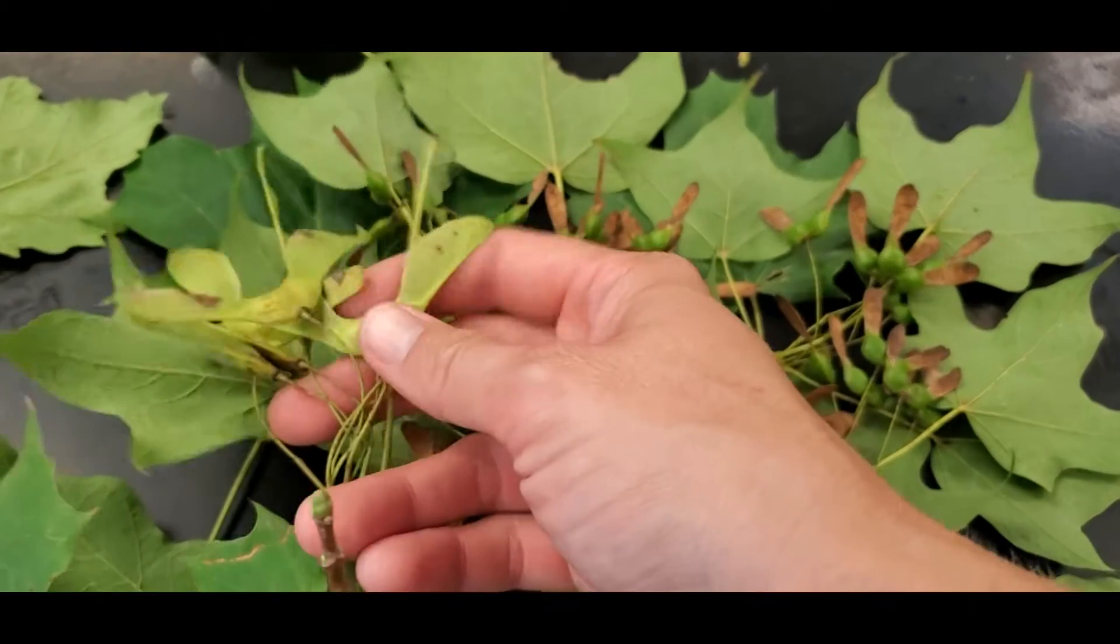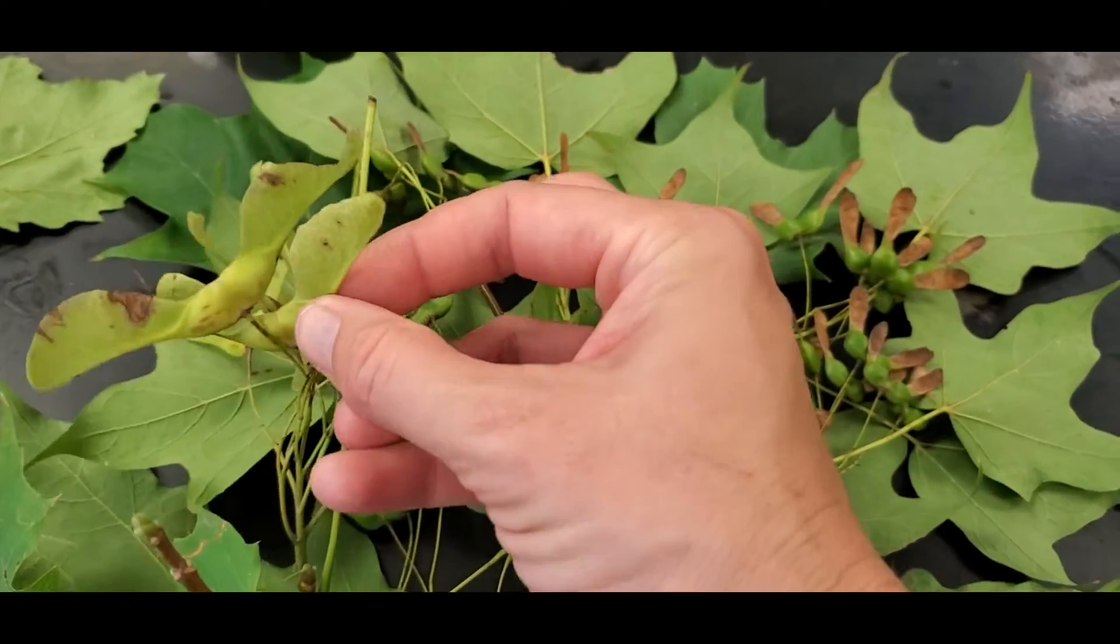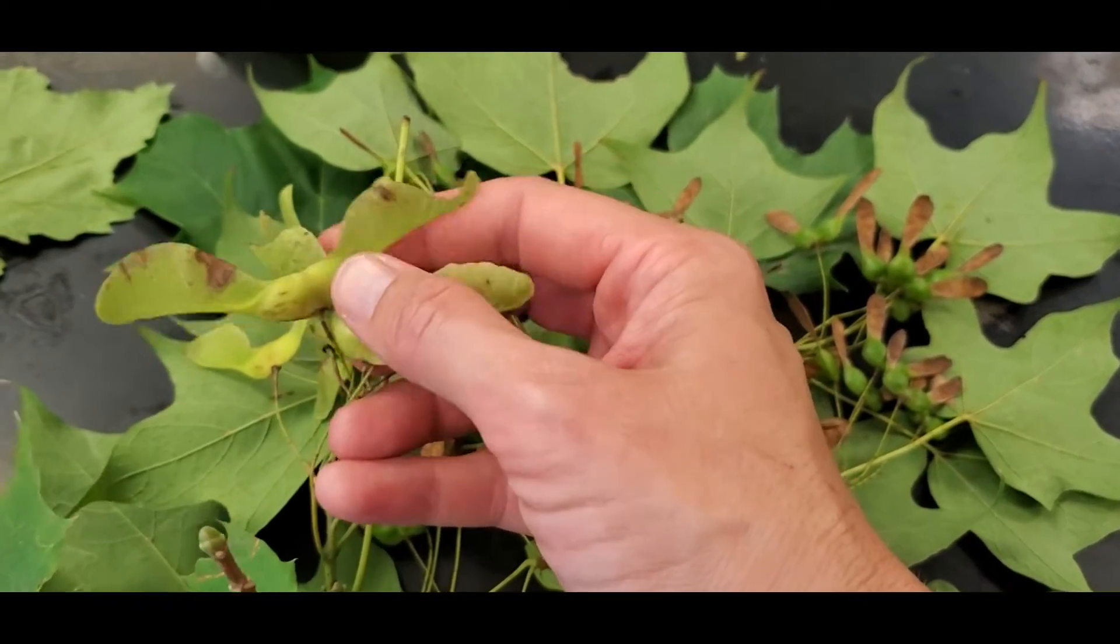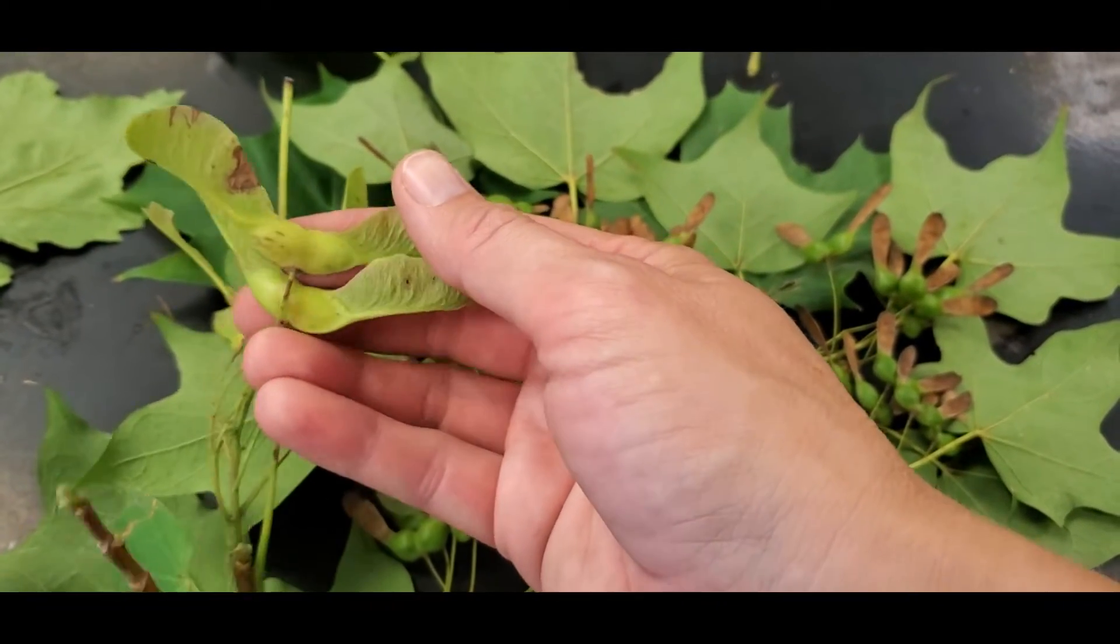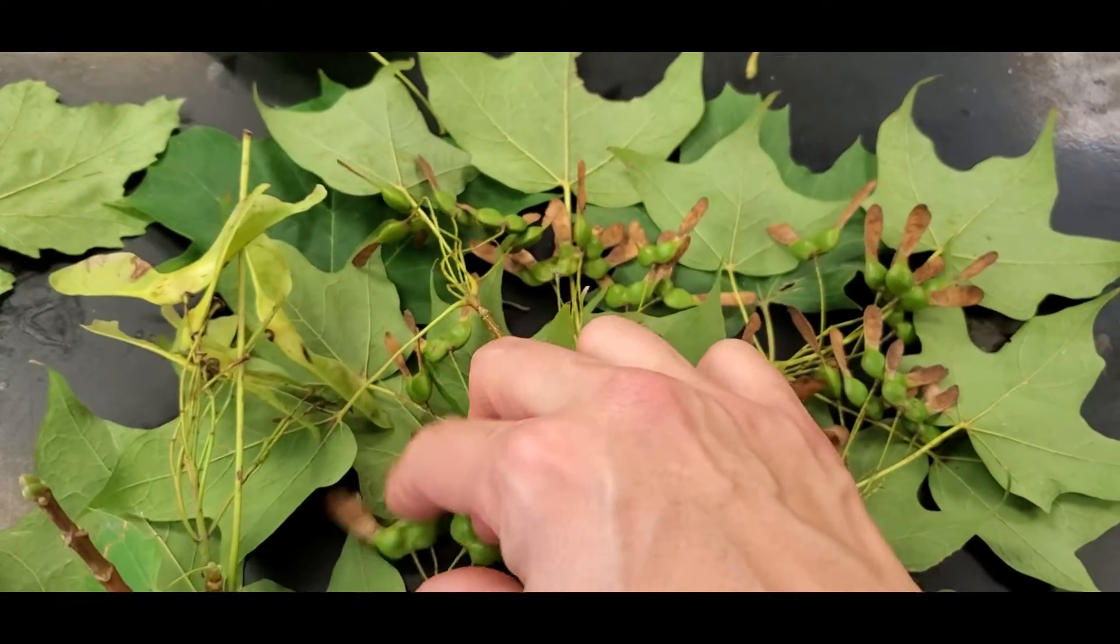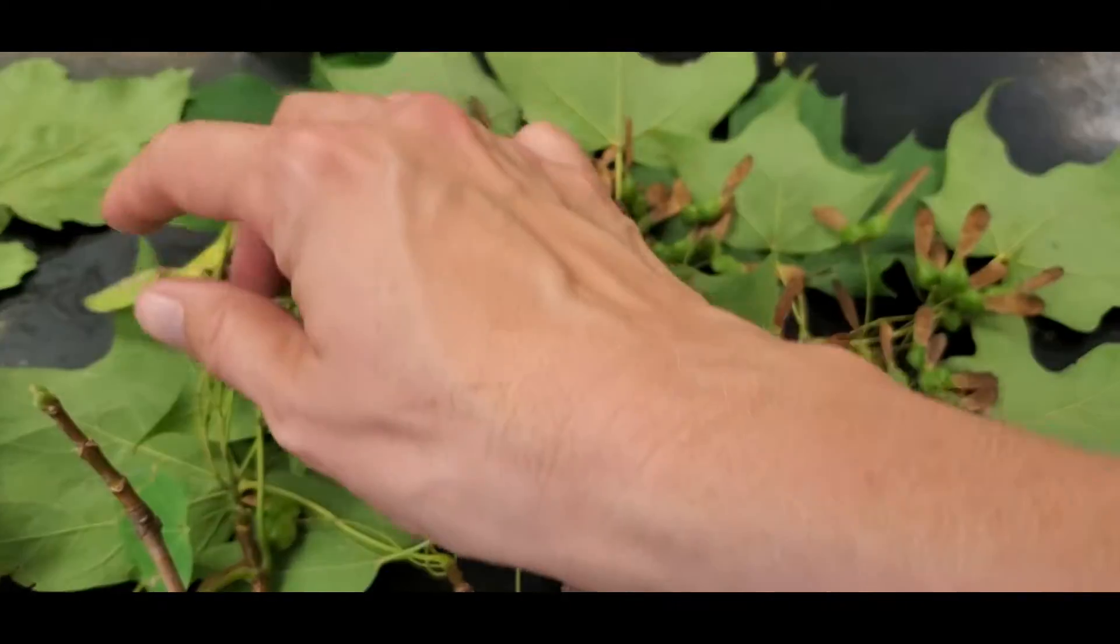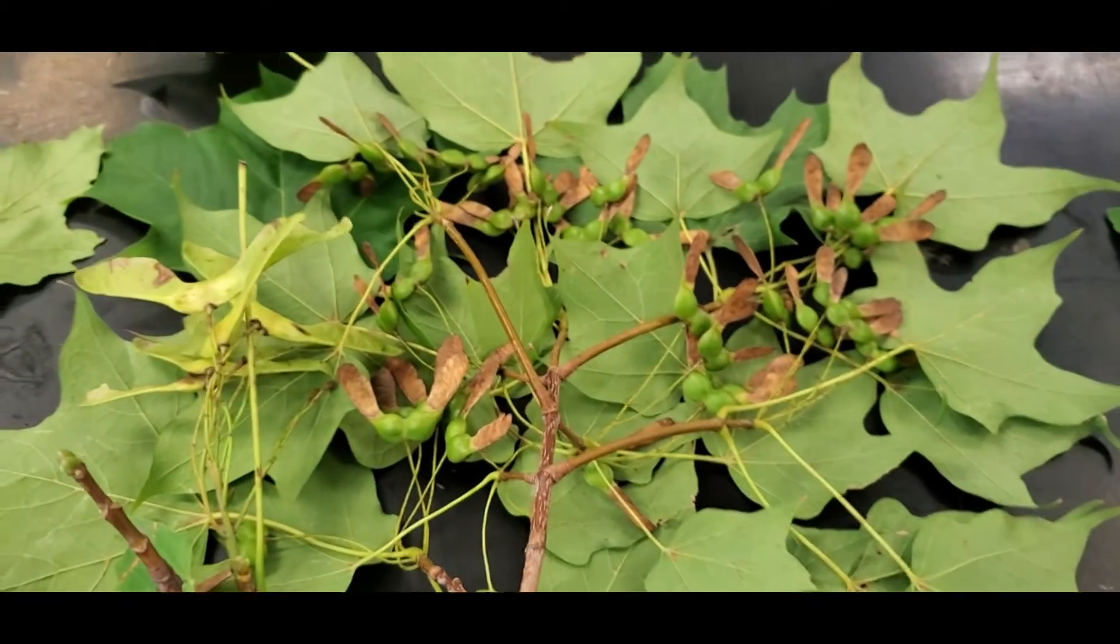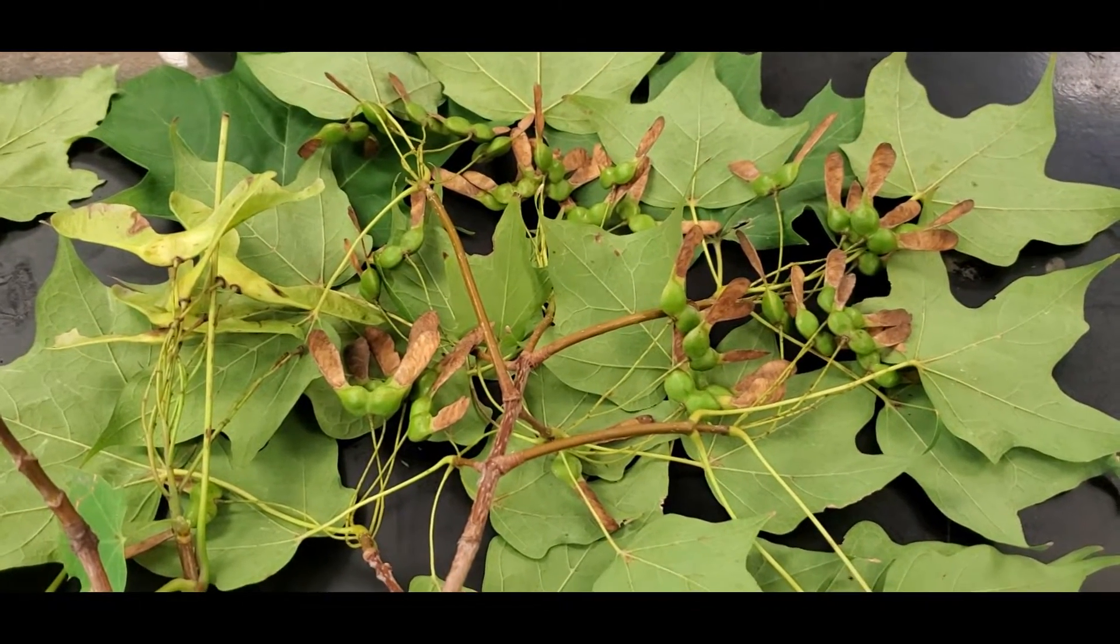But over here, you can see these. These have a much flatter actual ovary to them. The wing is larger. It's over to the side rather than going straight down. This is the platinoides. This is Norway maple. So if you have the maple keys available, it's pretty hard to mix those two up if you look for those. And at this time of year, we're in late summer, early fall. It's fairly easy to tell them apart.